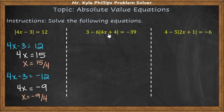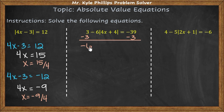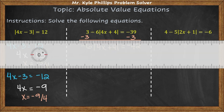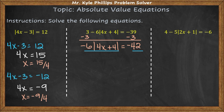Moving to the next example, we need to isolate the absolute value expression first, so we move the 3 to the other side. This gives us negative 6 times the absolute value of 4x plus 4 equals negative 42. Since negative 6 is being multiplied, we divide both sides by negative 6. Now we have the absolute value of 4x plus 4 equals 7.